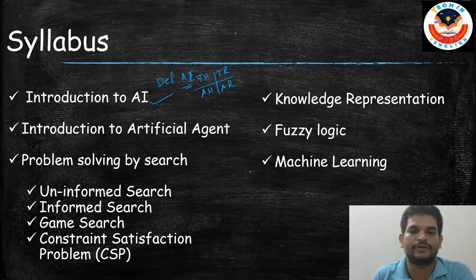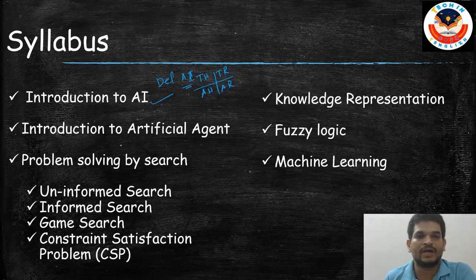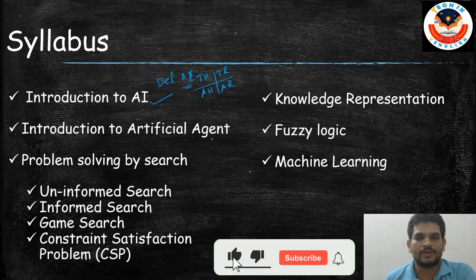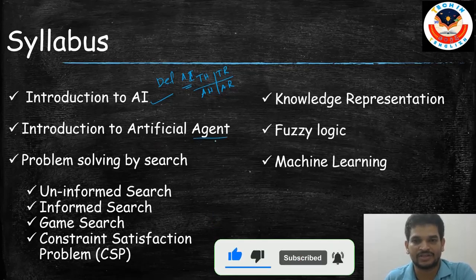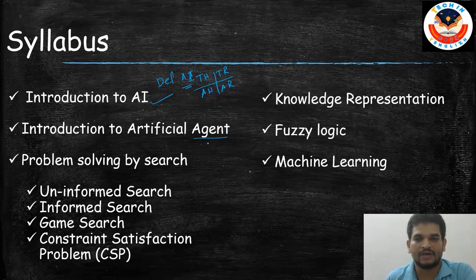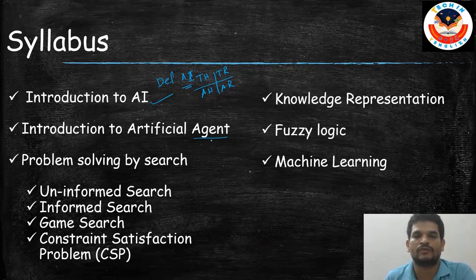Then we are going to look at the topic Introduction to Artificial Agent. In this topic we will look at what is an agent, what is an artificial agent, and what are the different types of agents. We have five different types of agents and we will see all those things.